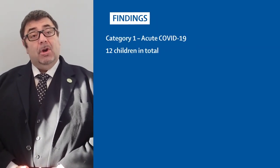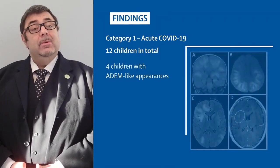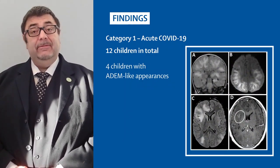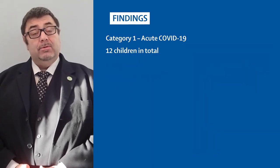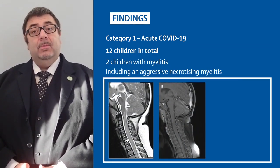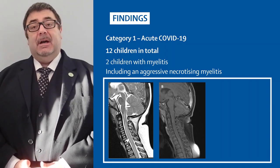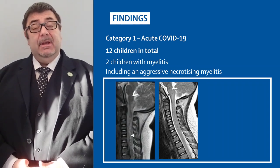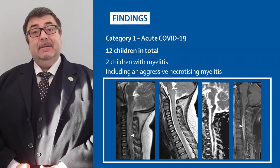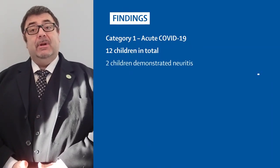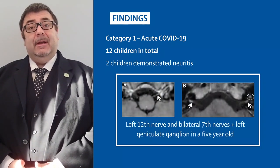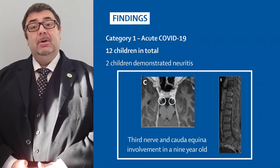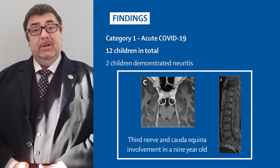In category 1, the most common imaging finding was an autoimmune-type imaging picture, which we refer to as an ADEM-like imaging phenotype. Two children had myelitis — in one, there was an aggressive acute necrotising myelitis with waxing and waning of signal abnormalities over time, in keeping with ongoing active disease. Two children also demonstrated the fairly frequent finding of neuritis involving the cranial nerves and/or the cauda equina, which did not always correlate with nerve dysfunction.